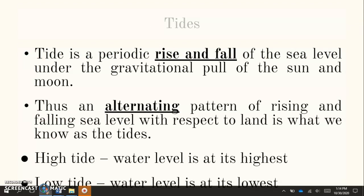So we've talked about ocean currents. We've talked about the waves. The last thing we need to review are the tides. And again, this should be a review from unit one. So a tide is a periodic rise and fall of the sea level under the gravitational pull of the sun and the moon.